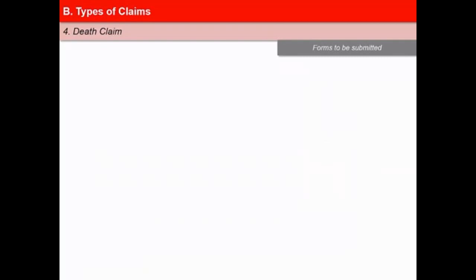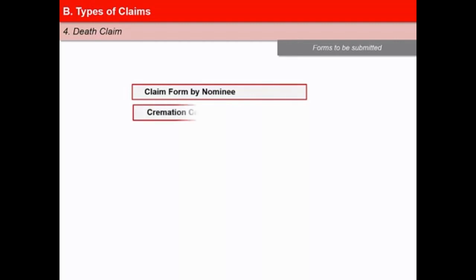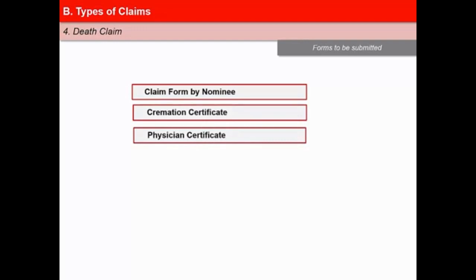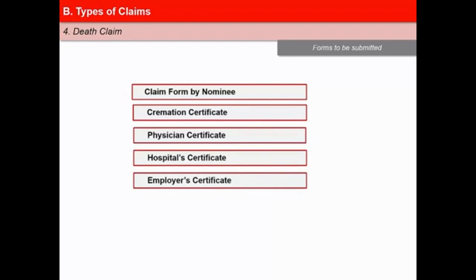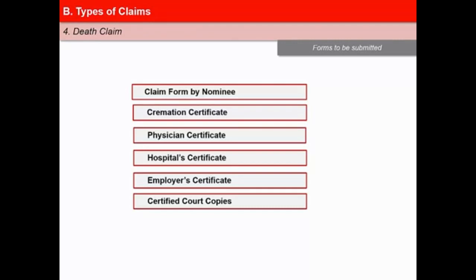A number of forms are needed to facilitate the processing of a death claim. They are: claim form by nominee, certificate of burial or cremation, treating physician certificate, hospital certificate, employer's certificate, certified court copies of police reports like First Information Report (FIR), Inquest Report, Postmortem Report, and Final Report — required in case of death by accident — and a death certificate issued by municipal authorities as proof of death.